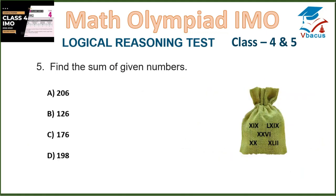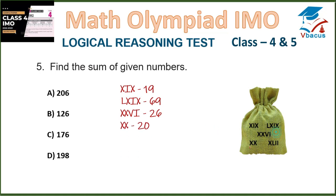Question 5. Find the sum of the given Roman numbers. XIX is 19, LXIX is 69, XXVI is 26, XX is 20, XLII is 42. If you add them, it will become 176, which is in option C.